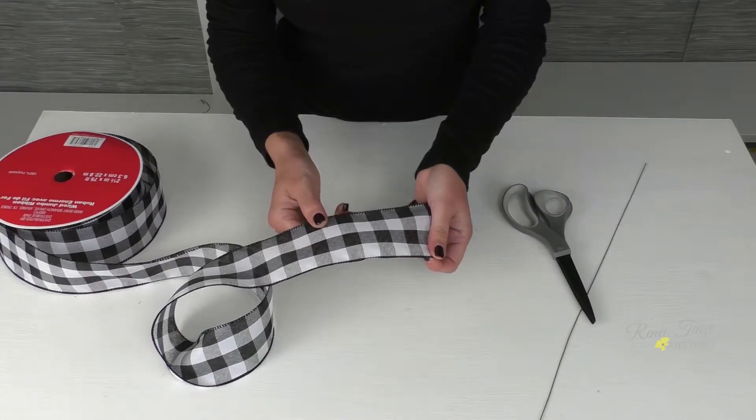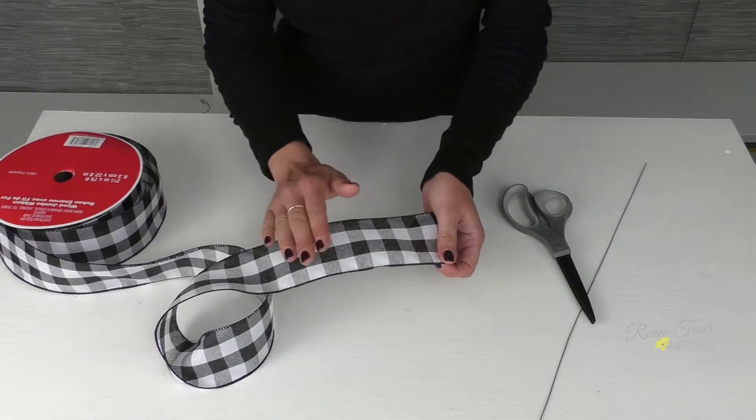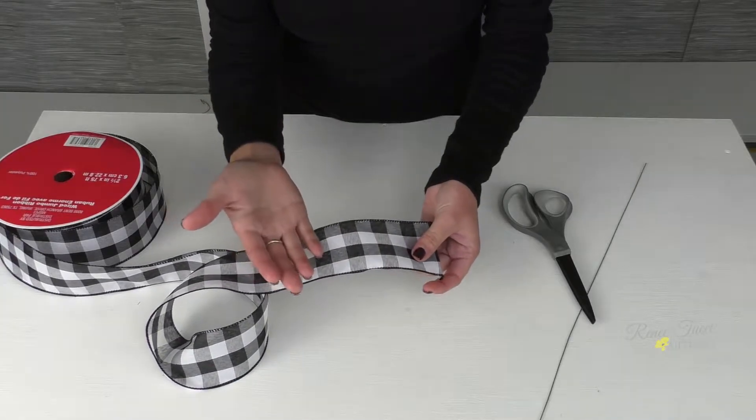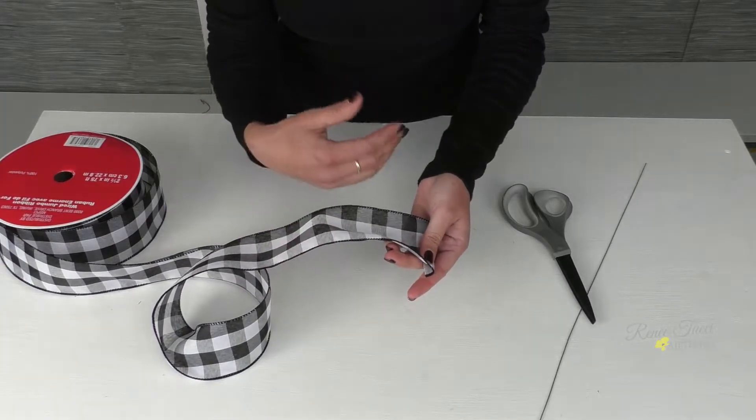The bow that we're going to make today is that classic bow shape that has the center loop, the one that you see on those perfectly wrapped packages under the Christmas tree.